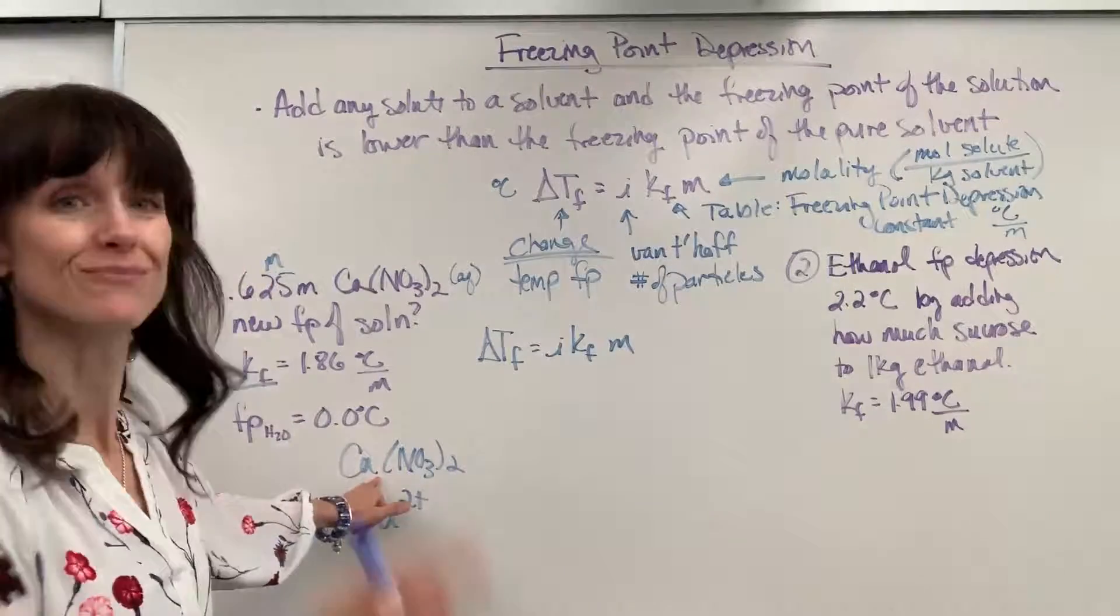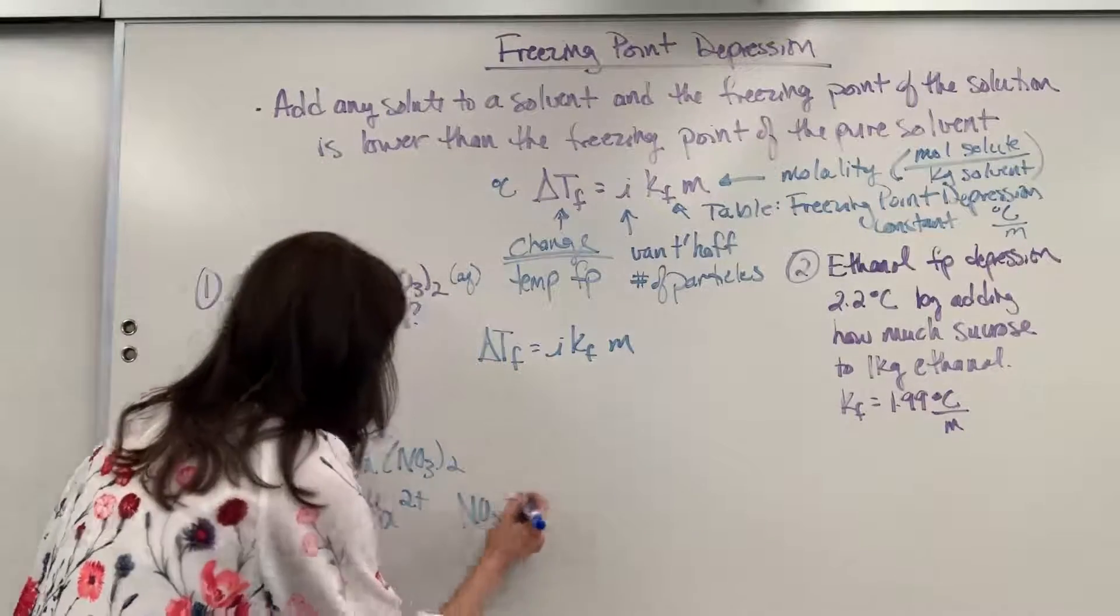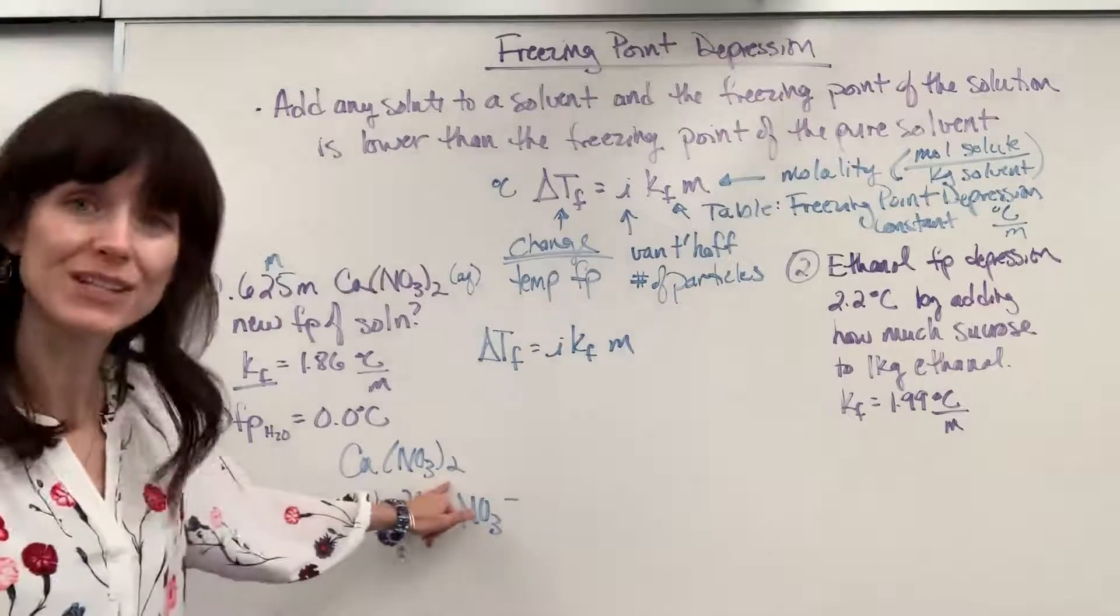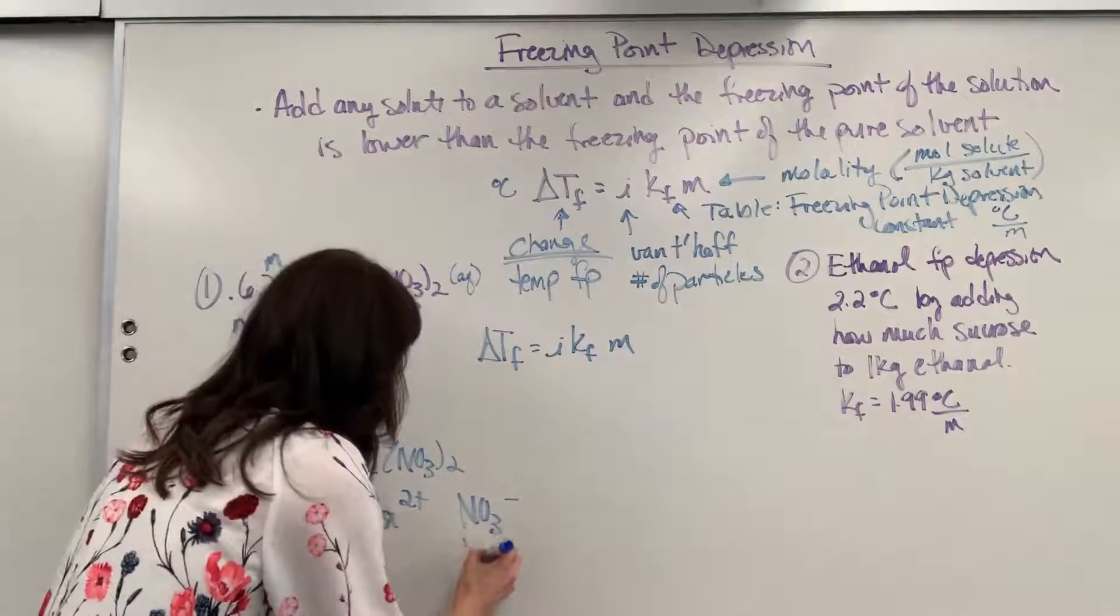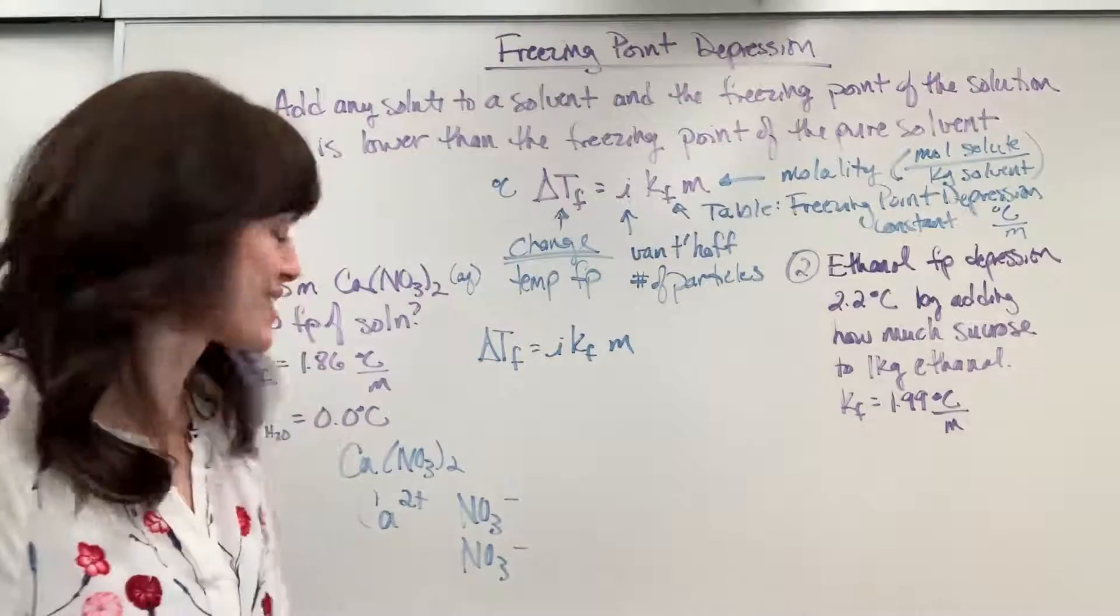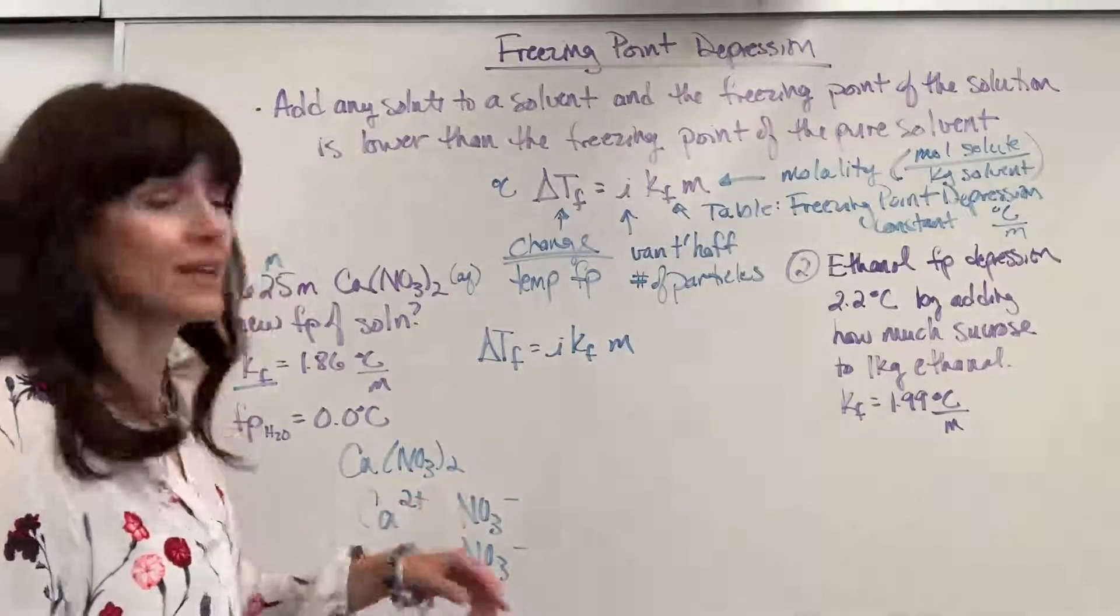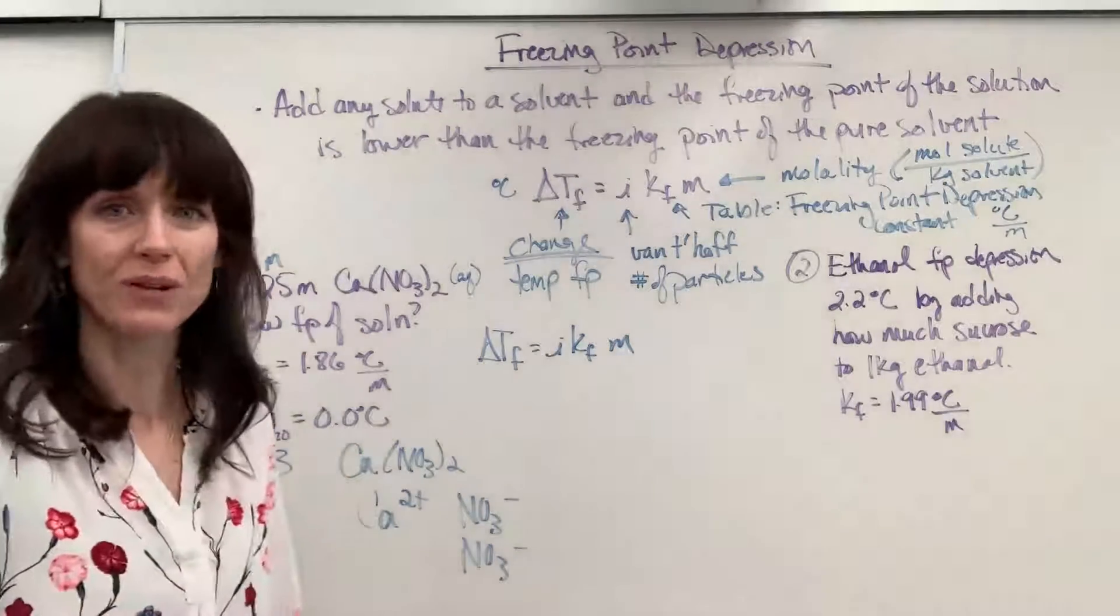And then my nitrates, that's the anion. So there's my anion. How many do I have of those was in parentheses with that subscript? Two. So we've got two of those. And then you just go and count the ions. One, two, three particles. So I is going to be three. We've got three particles. Now we can plug and chug.